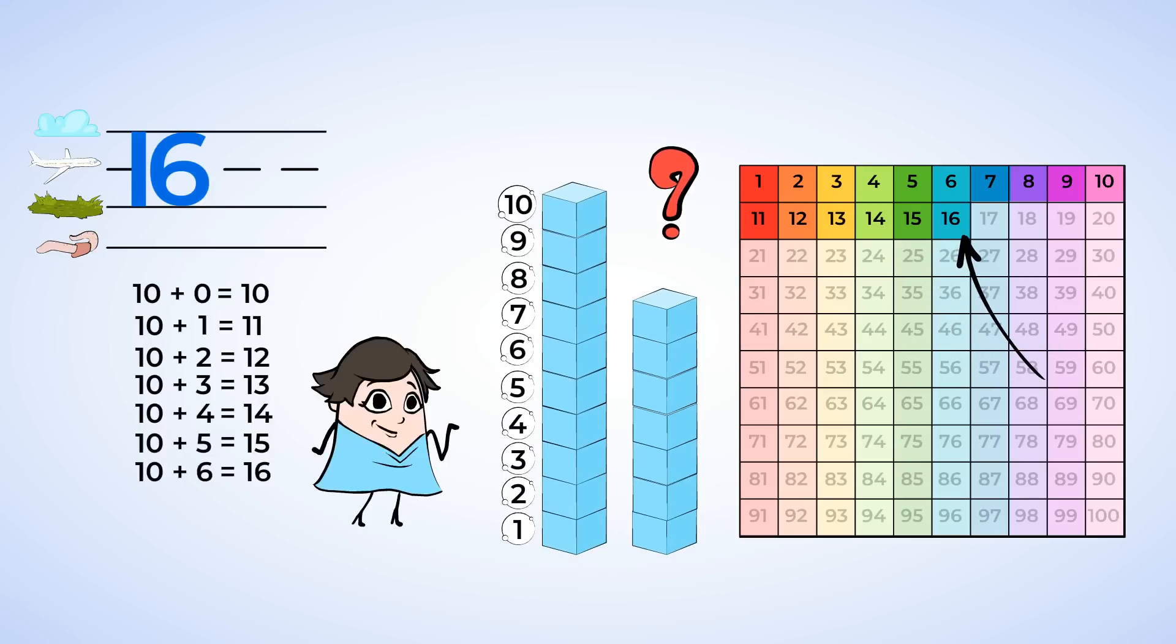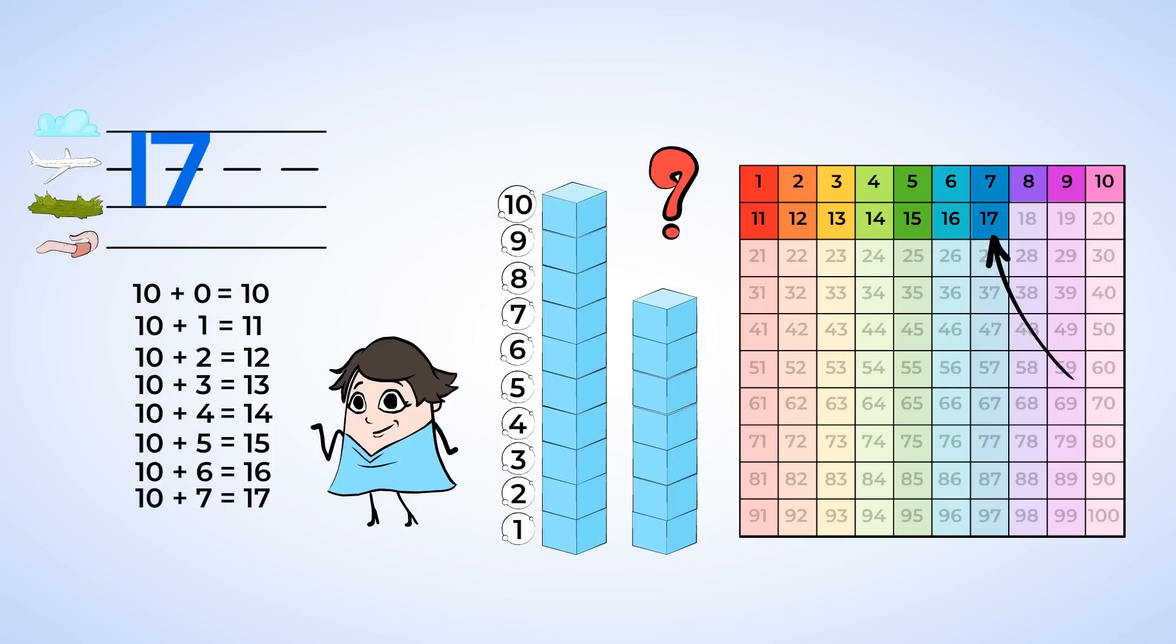And now we have 10 and 7 more. Write a 1 and then a 7. Way up high, slide down from the sky. 10 and 7 makes 17, because 10 plus 7 equals 17.